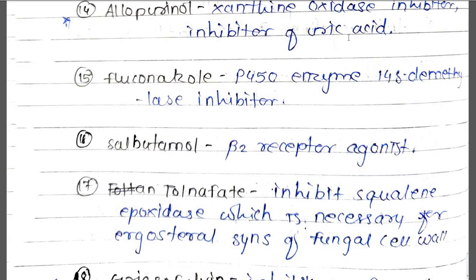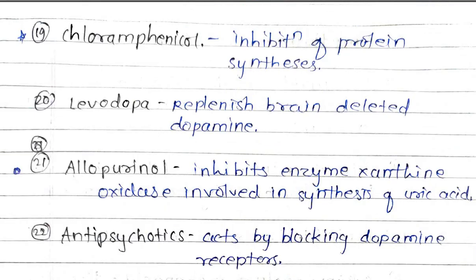Griseofulvin inhibits fungal cell wall activity. Chloramphenicol inhibits protein synthesis. Levodopa is a precursor of dopamine and replenishes brain-depleted dopamine.